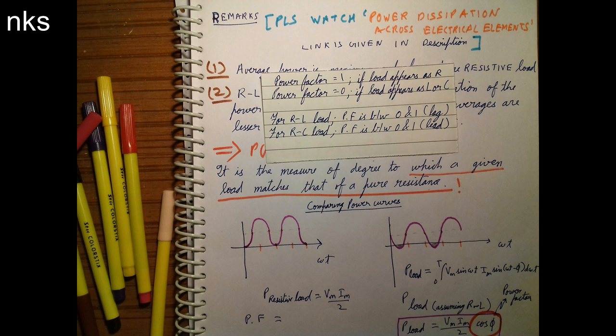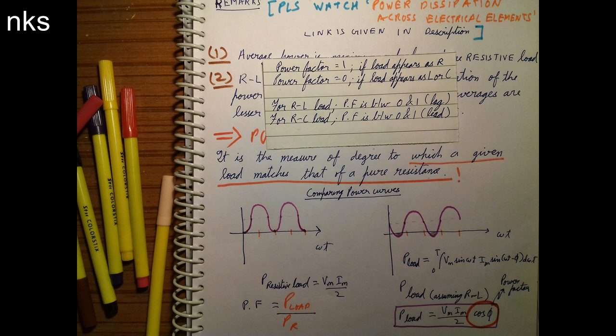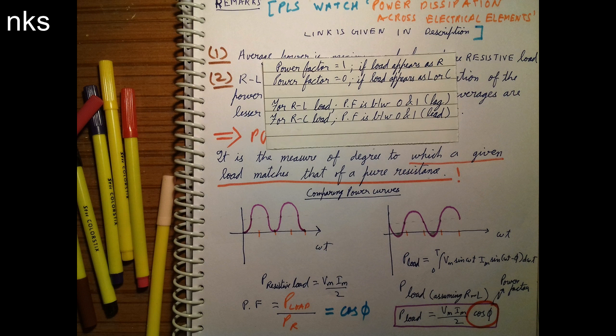Listen to me carefully: that is P load by PR. That is what it is, the degree to which the P load matches to that of pure resistance. So it is the ratio, that is P load by PR, and what it comes out to be: cos φ. Remember, power factor comes out to be cos φ.